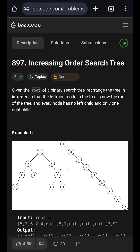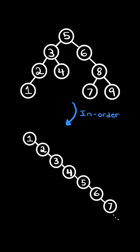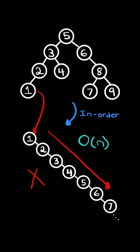Increasing order search tree. Given a binary search tree, we arrange the tree in order such that the leftmost node of the tree is now the root, and furthermore every node in the new tree has no left children. The new tree only has right children with all the nodes appearing in order. We will solve this in O of n time.